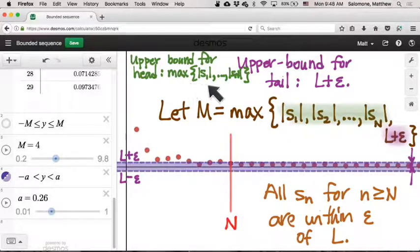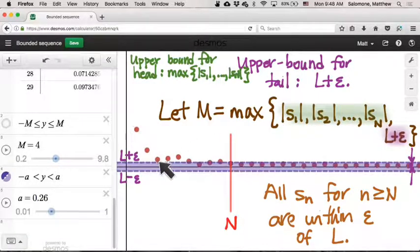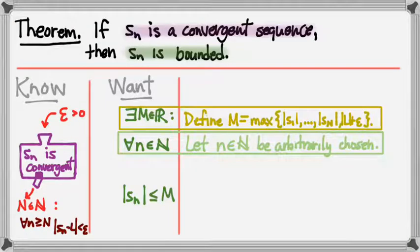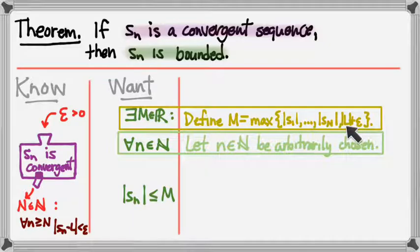So take the upper bound for the head, take the upper bound for the tail, and take the larger of those two. We can write M as the maximum of the absolute values of all the finitely many terms in the head of the sequence, and L plus epsilon, which bounds all the infinitely many terms in the tail. And because the limit L could be negative or positive, we take the absolute value of L so that it works in both cases.